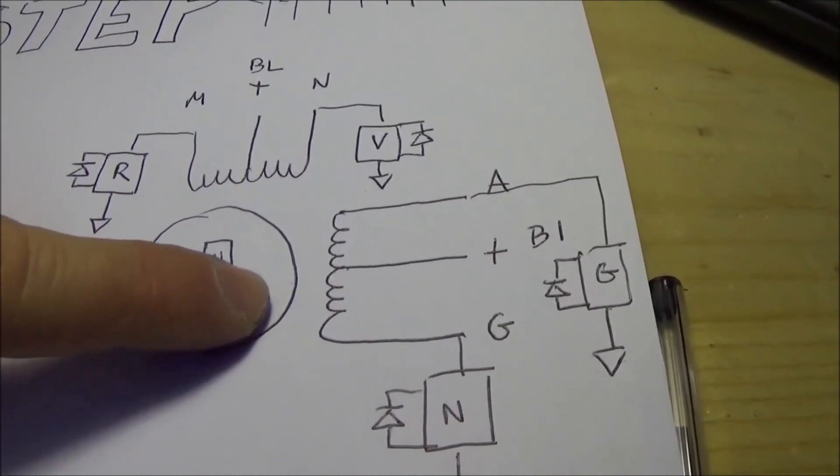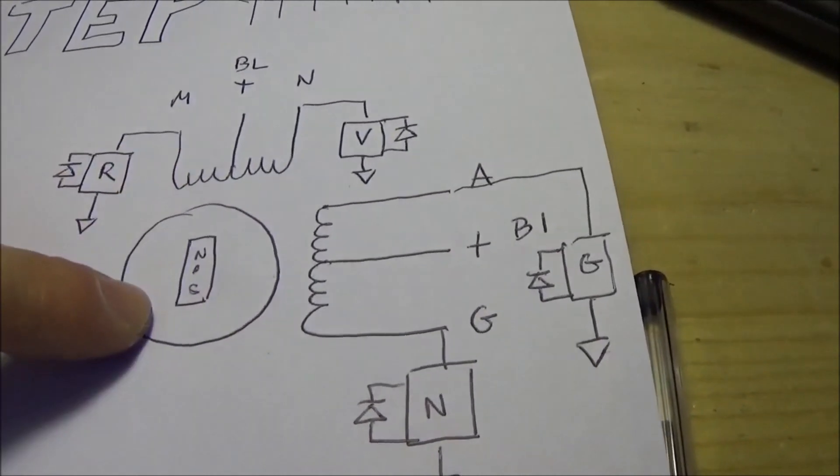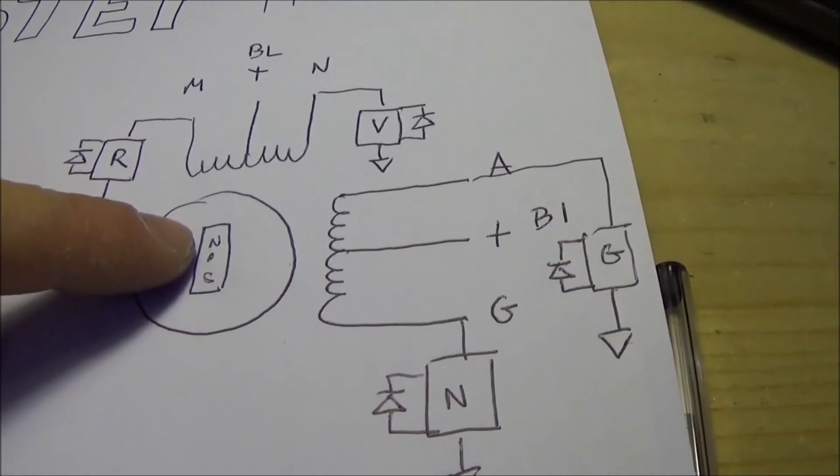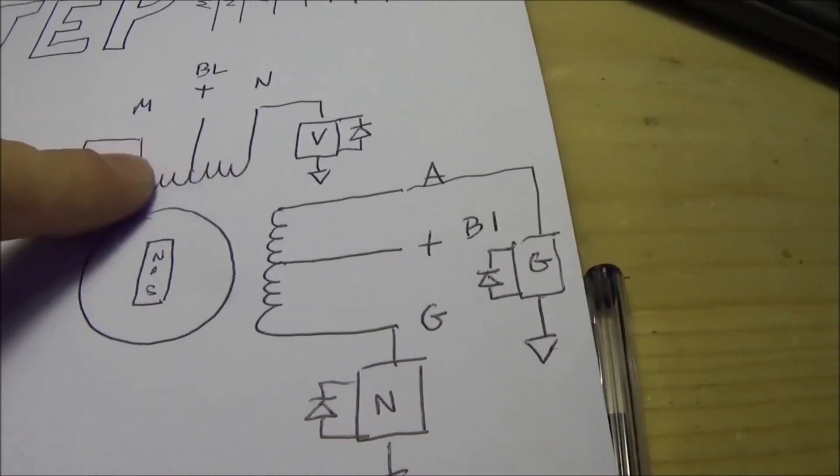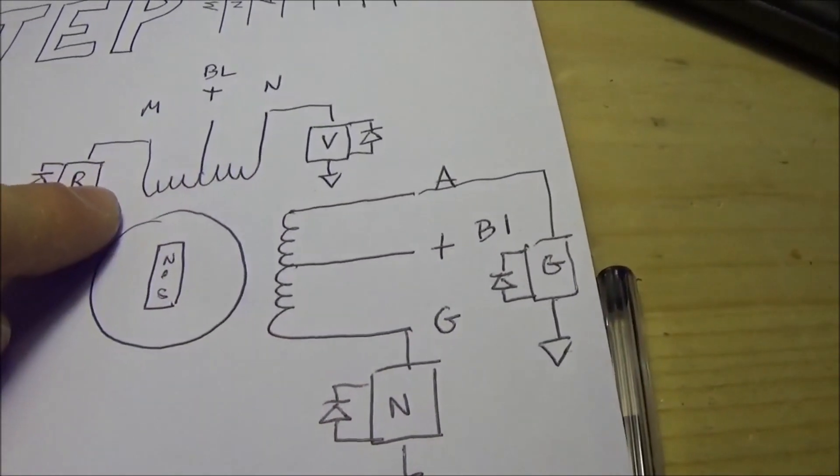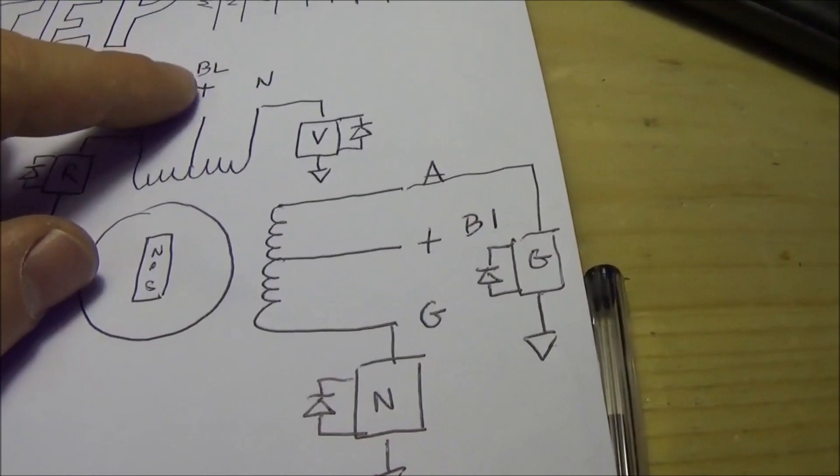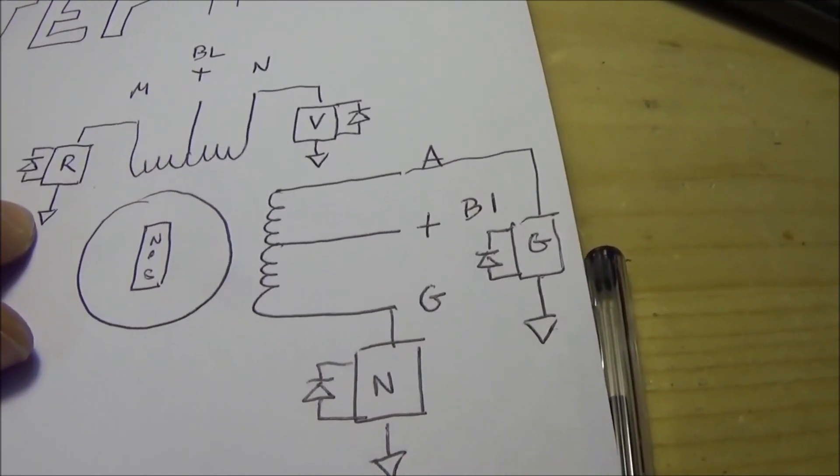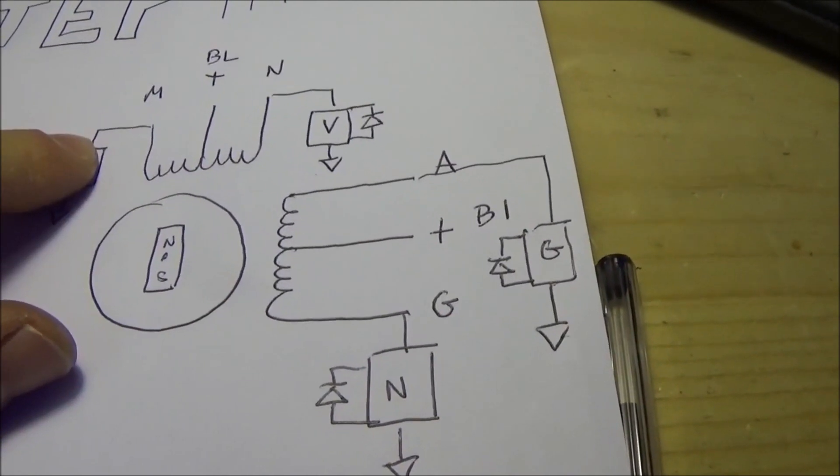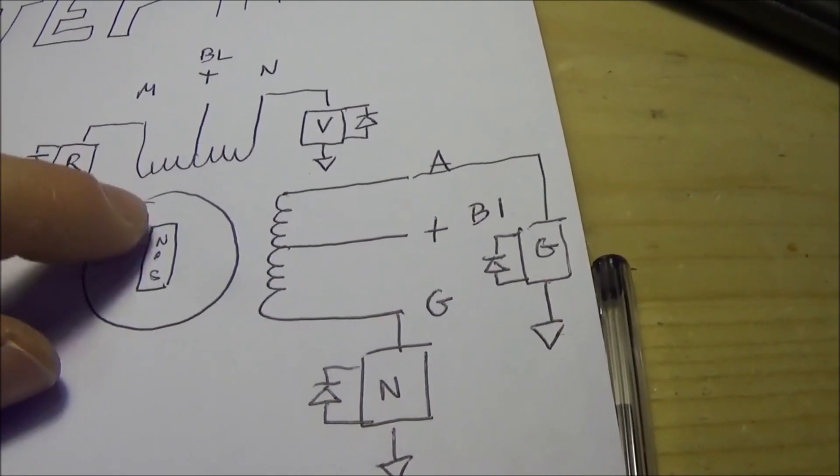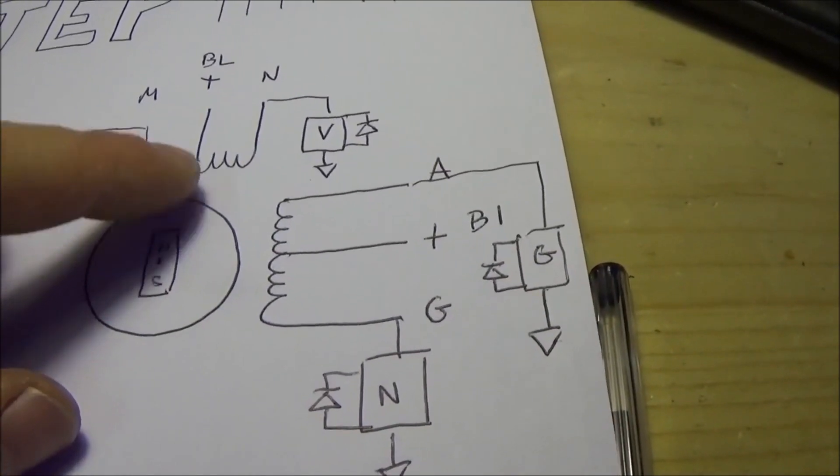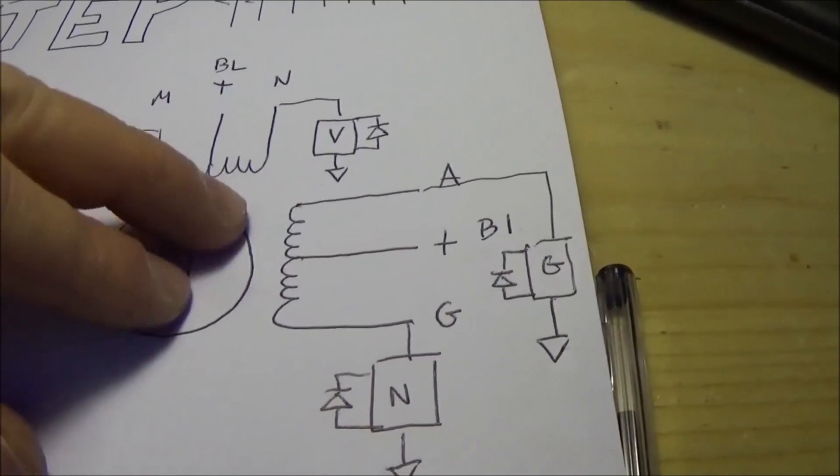And the rotor is a simple magnet that is moved by the magnetic field produced by these coils. So if we put a positive voltage between here and here the current will flow like this and move the motor in that way. Otherwise in the opposite sense.